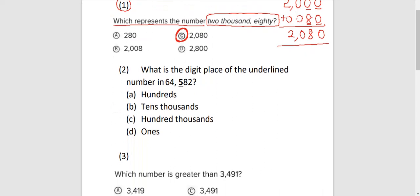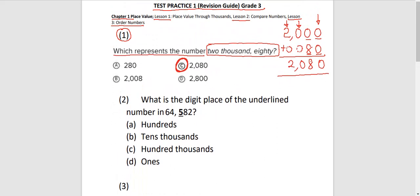Let's try number 2. I want you to pause the video and choose your answer before you look at the answer. Read the question. Always read the question. What is the digit place of the underlined number in 64,582? The underlined number is 5. Let me circle it.